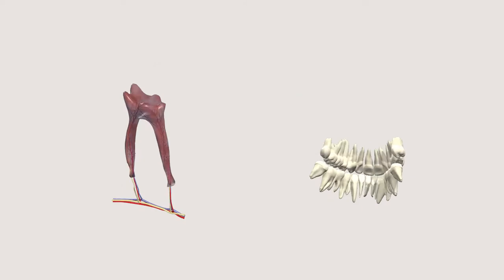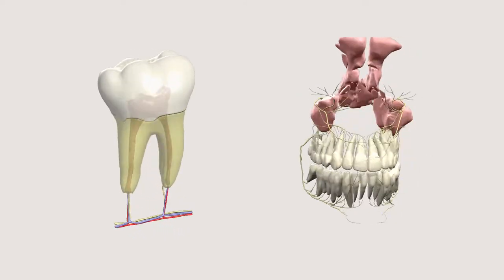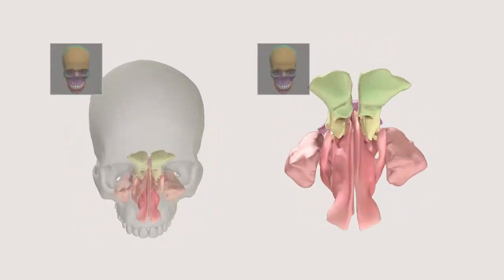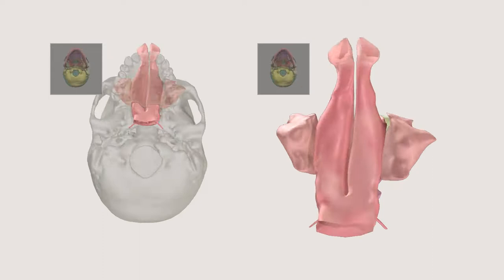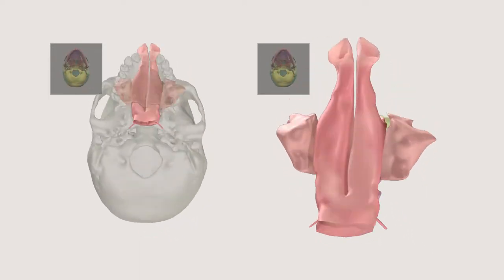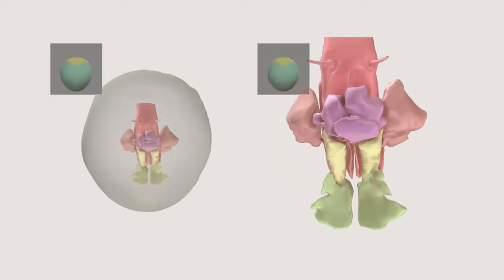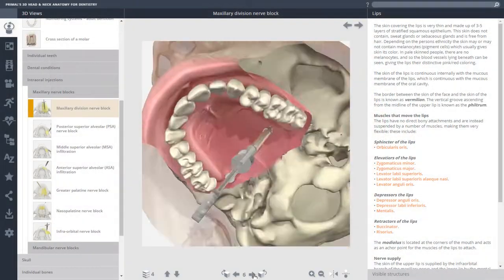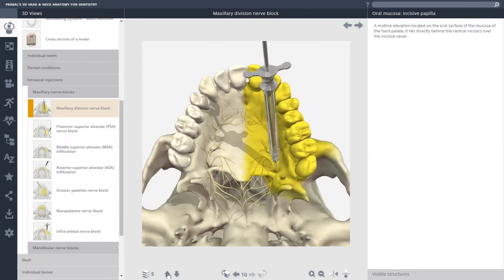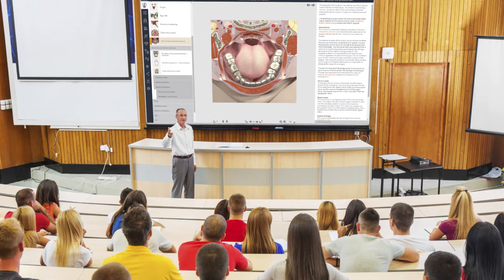Many views can be rotated 360 degrees or tipped in the vertical axis to give you a better view of specific anatomical structures. The combination of engaging visual content and an intuitive interface makes teaching and clinical explanation more compelling and memorable.